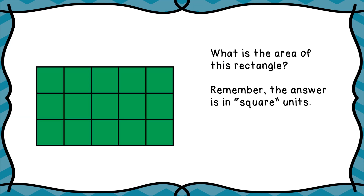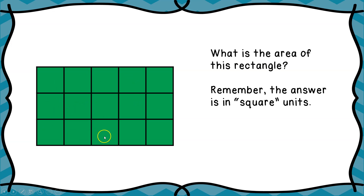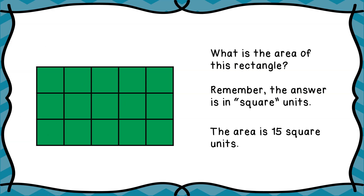So what is the area of this particular rectangle? Remember to give your answer in square units. For this one there are no measurements on the side, so we're going to count the squares: one, two, three, four, five across. And then we've got three going down, so we can multiply five times three, or just count all the squares — one through fifteen. Either way, our answer is fifteen square units.